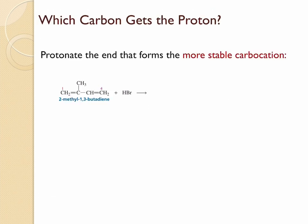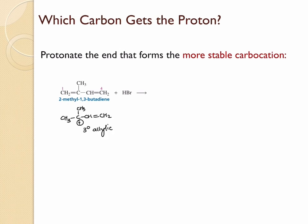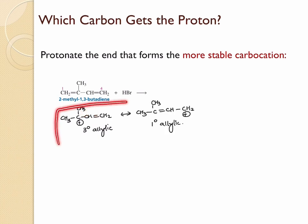What happens when you take an unsymmetrical conjugated diene and let it undergo electrophilic addition with one equivalent of HBr? Which double bond will react? This depends on the most stable carbocation formed. If the C1-C2 double bond undergoes electrophilic addition following Markovnikov's rule, hydrogen adds to one carbon and this carbon bears the positive charge — forming a tertiary allylic carbocation, with the double bond able to shift to give a second carbocation.